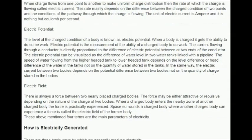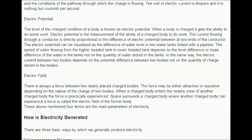Electric current: when charge flows from one point to another to make uniform charge distribution, the rate at which the charge is flowing is called electric current. This rate mainly depends on the difference between the charged condition of two points and the conditions of the pathway through which the charge is flowing. The unit of electric current is ampere, which is coulombs per second. Electric potential: the level of the charged condition of a body is known as electric potential. When a body is charged, it gets the ability to do some work, and electric potential is the measurement of that ability. The current flowing through a conductor is directly proportional to the difference of electric potential between its two ends. Electric potential can be visualized like the difference of water level in two linked water tanks — the flow speed depends on the level difference, not the quantity of water stored. Similarly, electric current between two bodies depends on the potential difference, not on the quantity of charge stored.